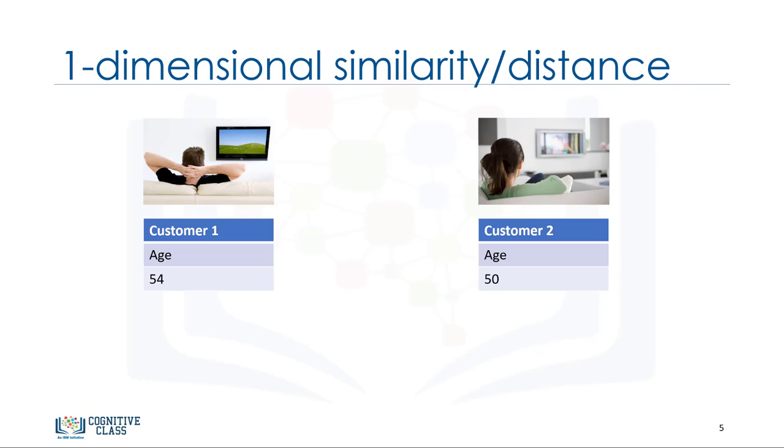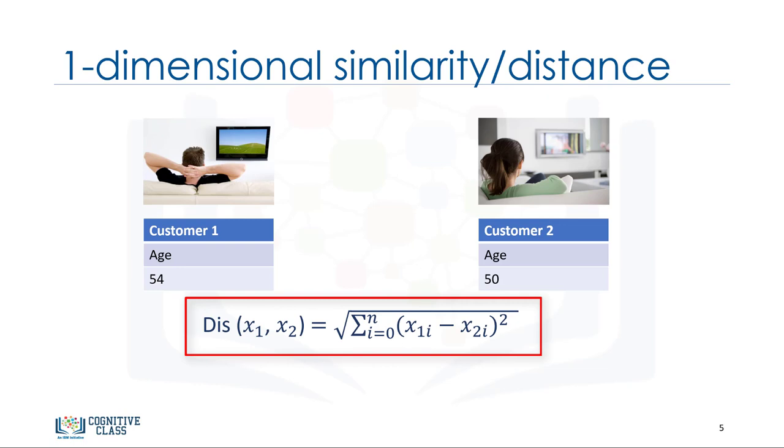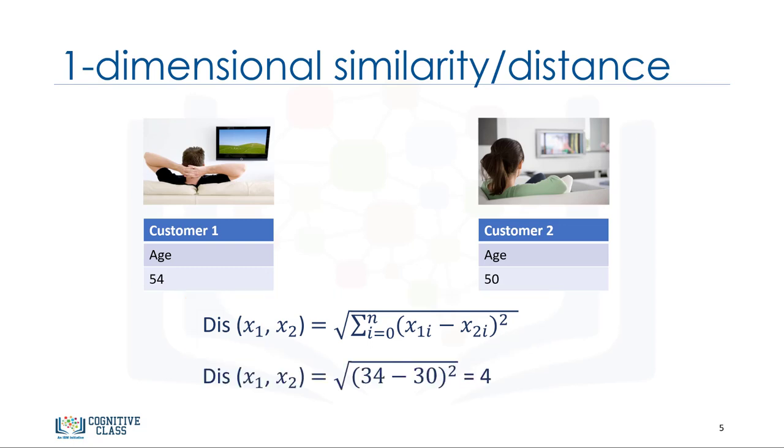Assume that we have two customers. We'll call them customer one and two. Let's also assume that we have only one feature for each of these two customers, and that feature is age. We can easily use a specific type of Minkowski distance to calculate the distance of these two customers. Indeed, it is the Euclidean distance. Distance of x1 from x2 is root of 34 minus 30 power 2, which is 4.